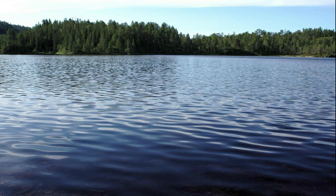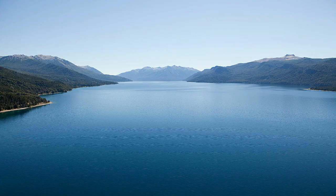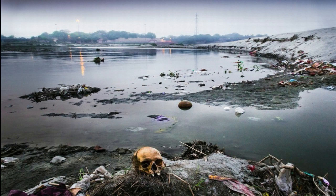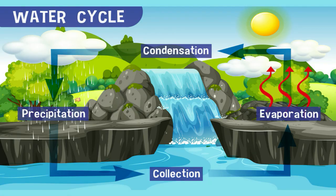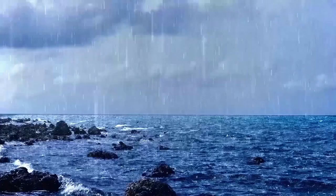There will always be the same amount of water on Earth. However, the problem is the quality of water that we use. Do you drink clean and fresh water? Where do you get the water that you drink? Water can be replaced. Water in rivers dries up, but when rain comes, the lost water is replaced.